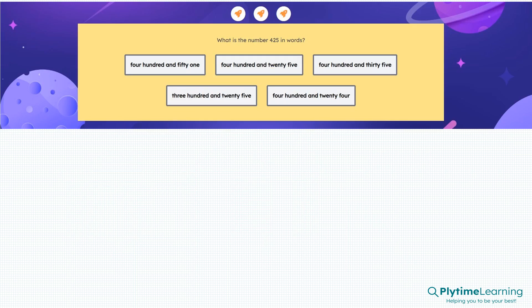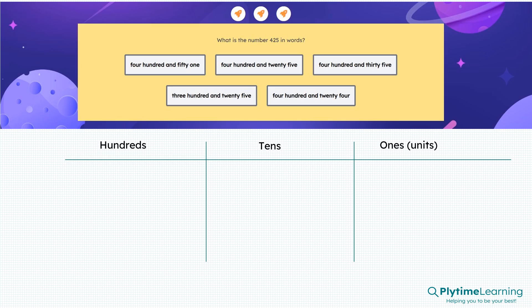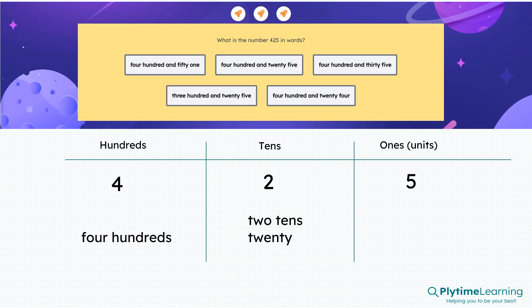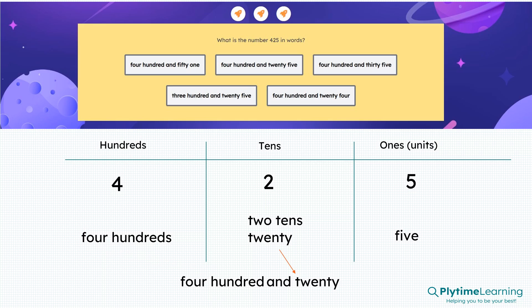What is this number 4, 2, 5 in words? If we had our columns, we have 4 in the hundreds column, 2 in the tens column, and 5 in the ones column. So we have 4 hundreds, 2 tens which is the same as 20, and 5 ones. If we write that all together, we have 400 and 25, so the answer is four hundred and twenty-five.